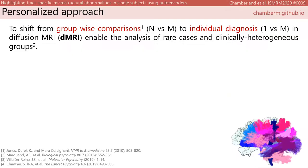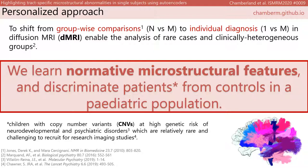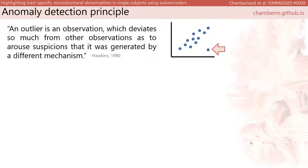To shift from group-level comparison to a more personalized approach, we present an anomaly detection framework to push diffusion MRI tractometry towards single subject analysis. This is based on the anomaly detection principle, where by definition an outlier is an observation which deviates so much from other observations as to arise suspicion that it was generated by a different mechanism.